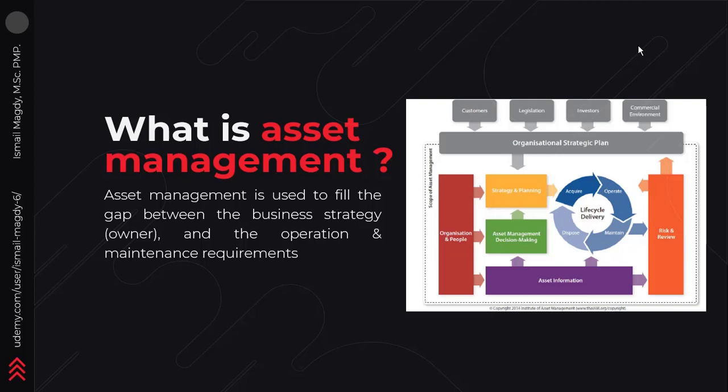Here we can see the asset management model by the IAM — the Institute of Asset Management. In this model, at the top we must have an organizational strategic plan. Based on this plan, we need a strategy and a plan to achieve it, which is obtained from asset management decision making. This decision making is based on information received from the assets, such as sensors and failure history. Those decisions lead to a strategy and a plan, and based on this plan along with asset information, we can manage the asset life cycle — acquiring, operating, and maintaining the asset until finally disposing of it.